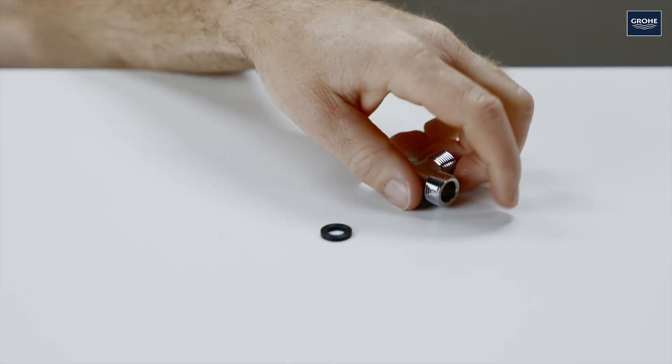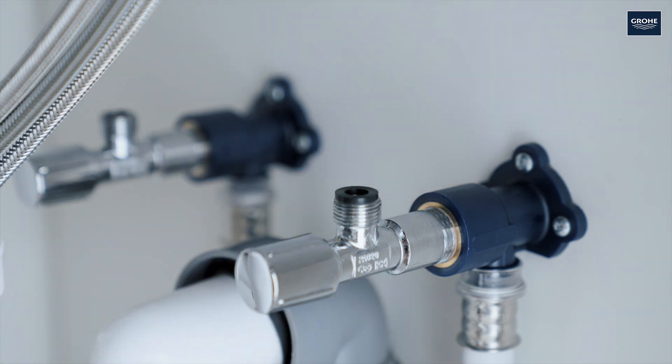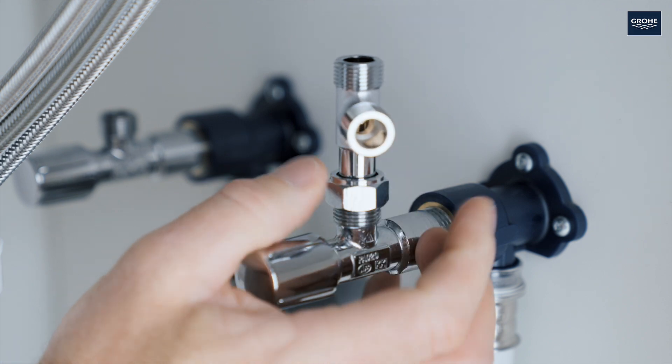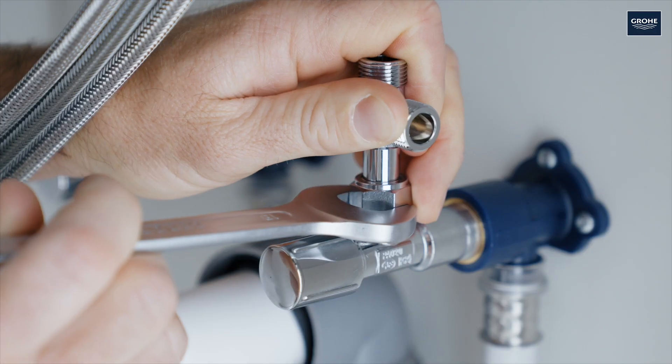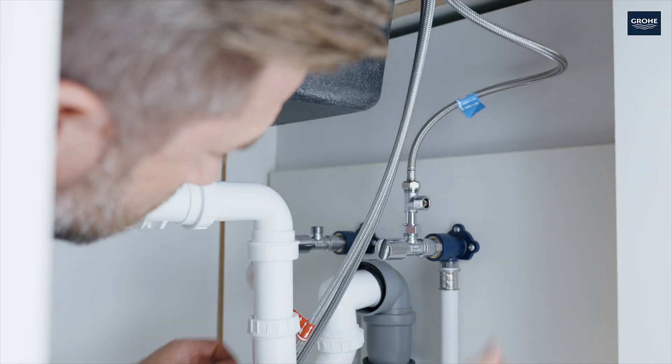Next, fit the T-piece with the seal and screw it onto the cold water corner valve. Then connect the hot and cold water.